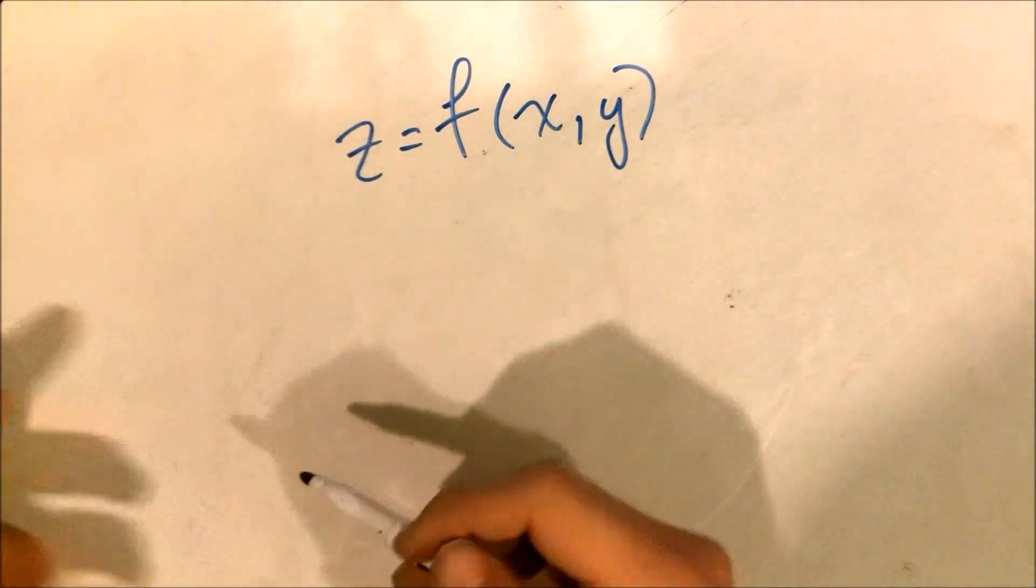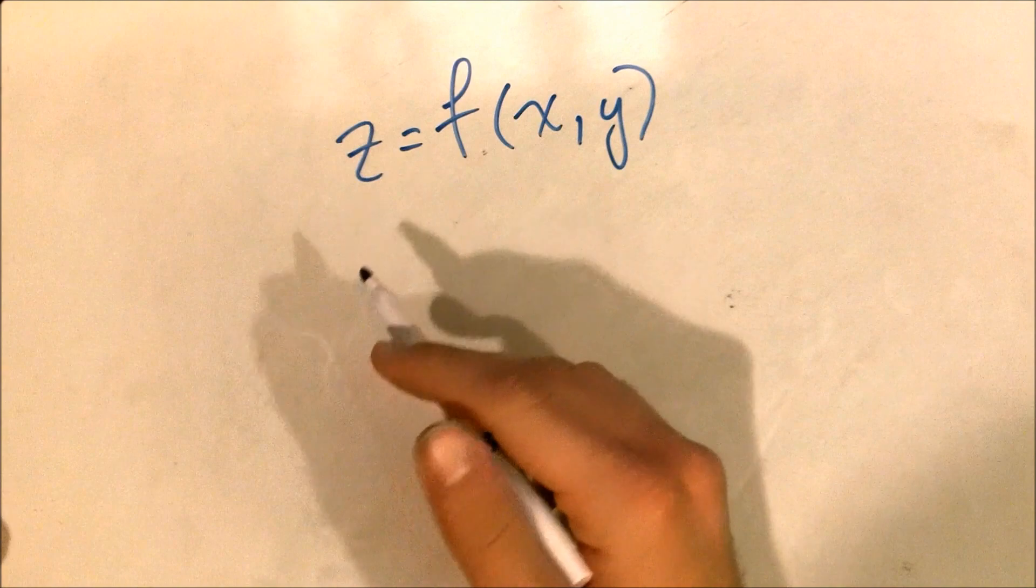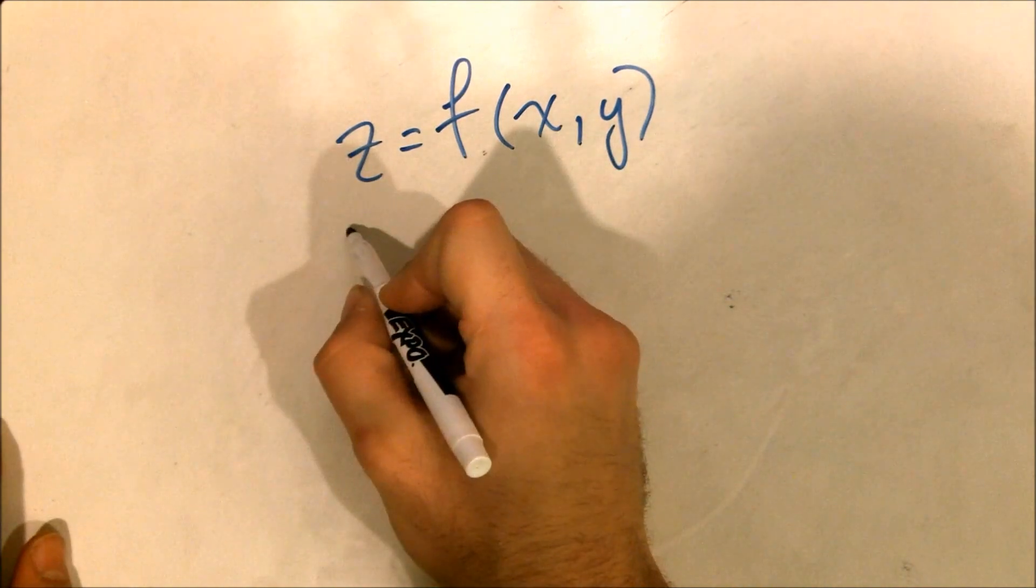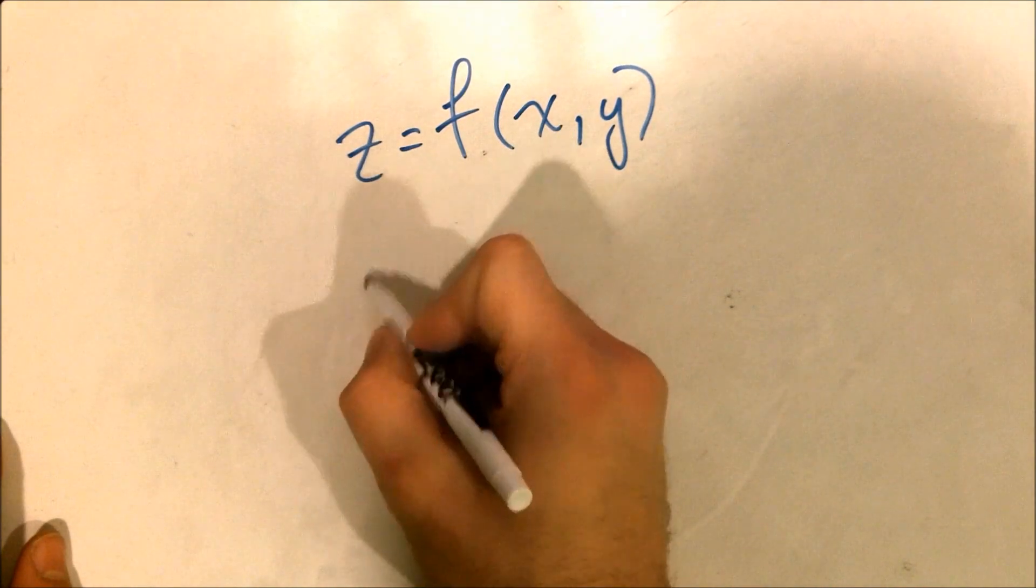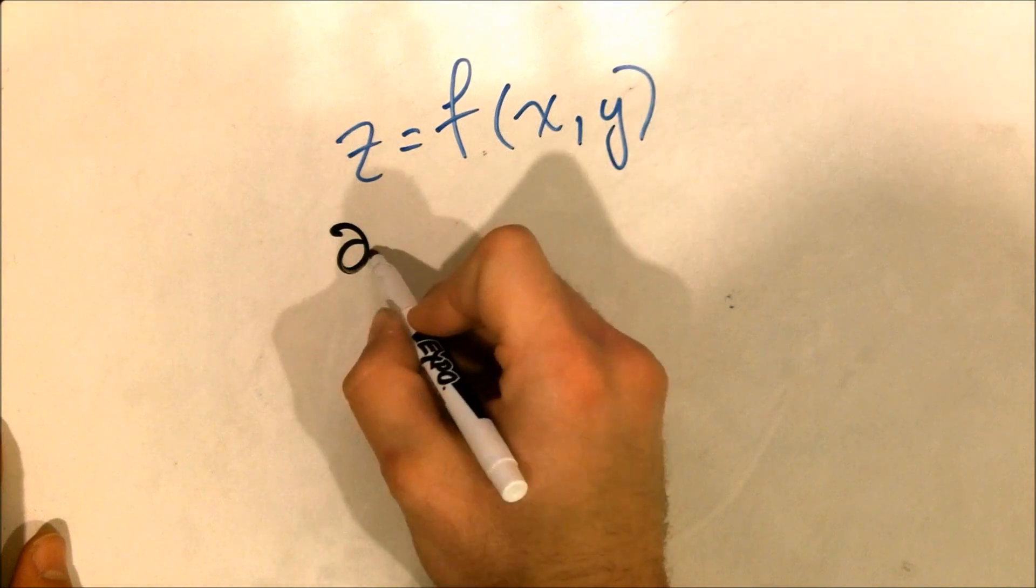Before, we said it's dZ by dX, but what if Y is there? Well, we take a partial derivative. Very simple. Instead of dZ by dX, we're going to use the Greek delta. And we're going to say del Z by del X.